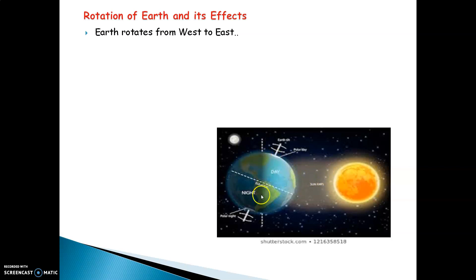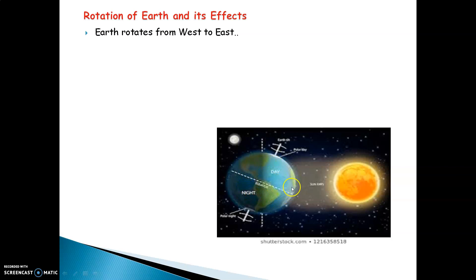Because of that, the half part which faces the sun experiences daytime. Exactly opposite of that part of the earth will experience nighttime, because that part does not face the sun. Similarly, while the earth is revolving around itself, this part of the earth will now face the sun and have daytime, while the other part will experience nighttime.